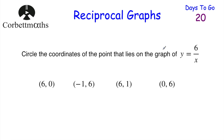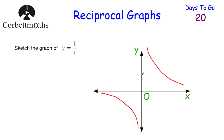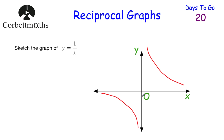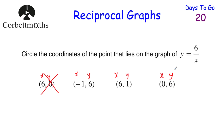The next question says to circle the coordinates of the point that lies on the graph of y equals 6 over x. Consider the options - 6, 0 would be 6 along 0 up, which is on the x-axis. The reciprocal graph doesn't touch the x-axis, so that point couldn't lie on the graph. And 0, 6 would be on the y-axis, which is also an asymptote, so that one couldn't lie on the graph either.